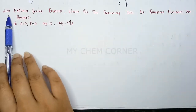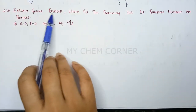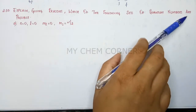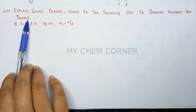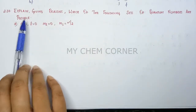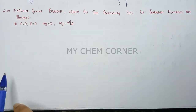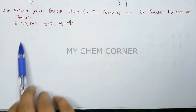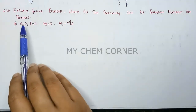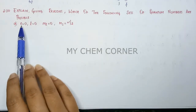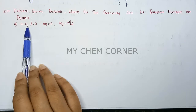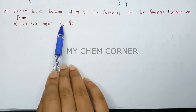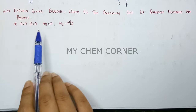Next question is 2.30: explain, giving reasons, which of the following sets of quantum numbers are possible. The first set is: n is equal to zero, l is equal to zero, ml is equal to zero, and ms is equal to plus half.